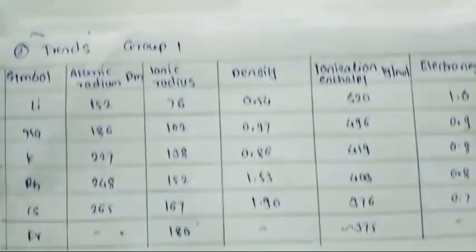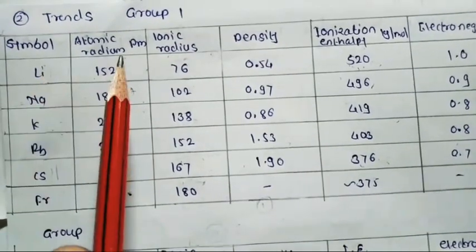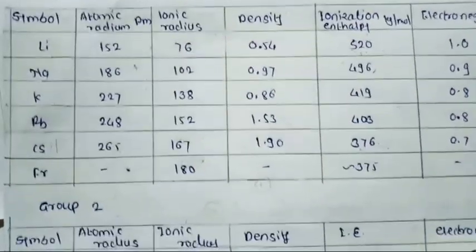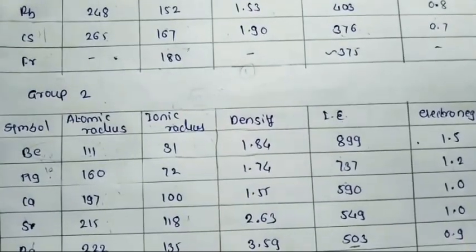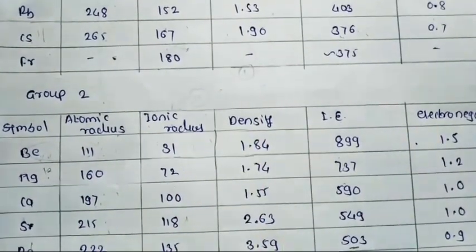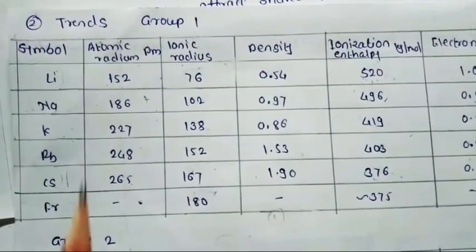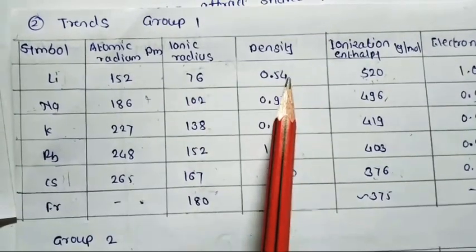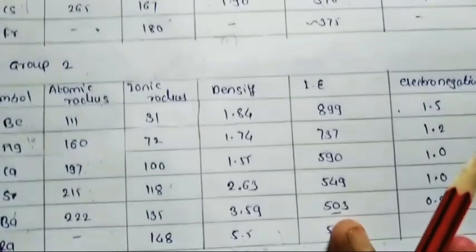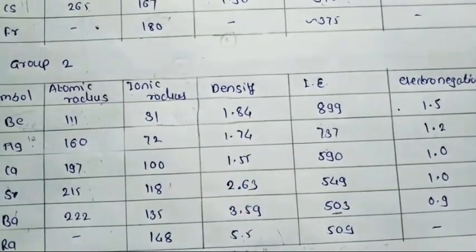Now we see trends in group 1 and group 2. The trends include: atomic radius, ionic radius, density — these increase down the group. Ionization enthalpy and electronegativity decrease down the group. This applies to both group 1 and group 2. For example, the atomic radius of lithium is 152 pm and of cesium is 265 pm.